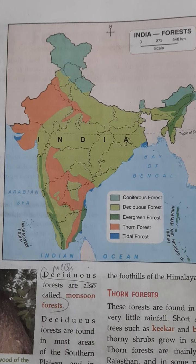There are 5 main types of forests found in India: number 1 is coniferous forest, number 2 deciduous forest, number 3 evergreen forest, number 4 thorn forest, and number 5 tidal forest. These are the main types of forests found in India.